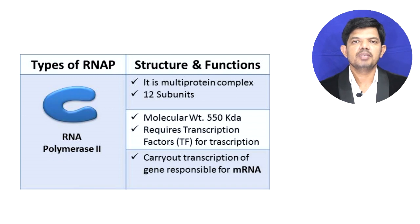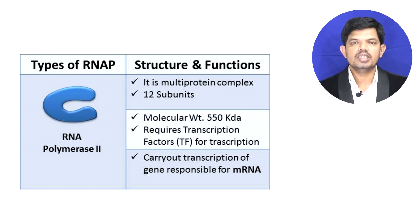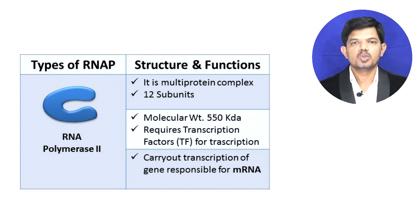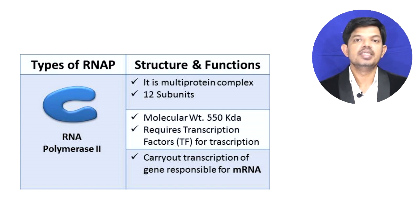RNA polymerase 2 is a multiprotein complex made up of 12 subunits with a molecular weight of approximately 550 kD. This RNA polymerase 2 requires various transcription factors for the transcription of genes; without the help of transcription factors, RNA polymerase 2 cannot work. These transcription factors are called GTFs, that is, general transcription factors.